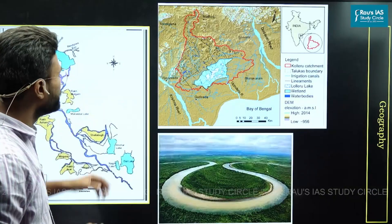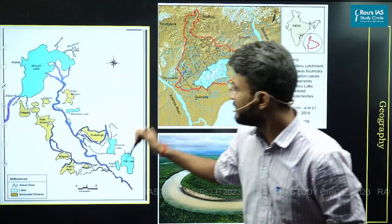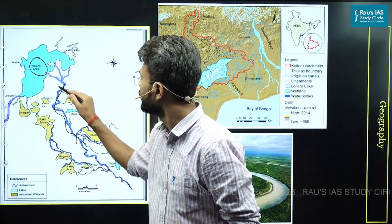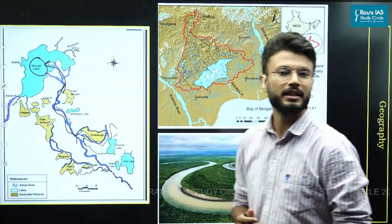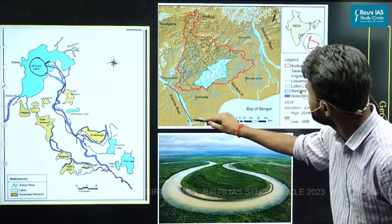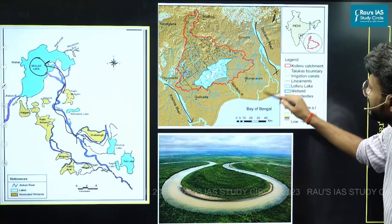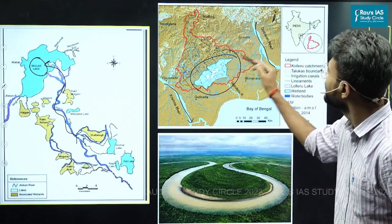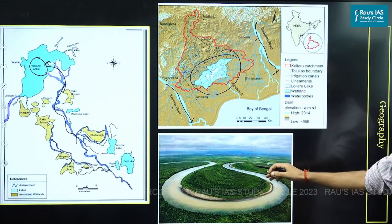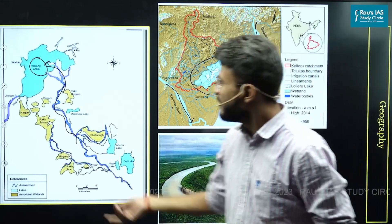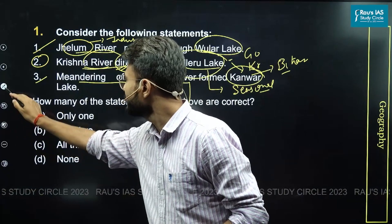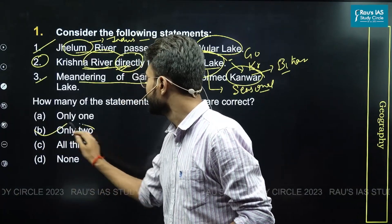Looking at this map, you can trace the river Jhelum here — this is the Jhelum river, and this is the Wular lake. It is clearly passing through the Wular lake. Here is the Kolleru lake, this is the Krishna river system, and this one is the Godavari river system. Kolleru is lying between these two river systems, not directly fed by either Krishna or Godavari. And this is the Kanwar lake, the Oxbow lake. Therefore, because two statements are correct and one is incorrect, option B — that only two is correct — is the answer.